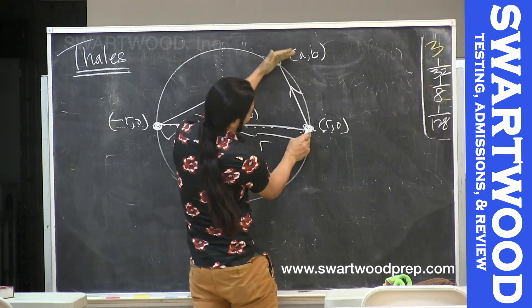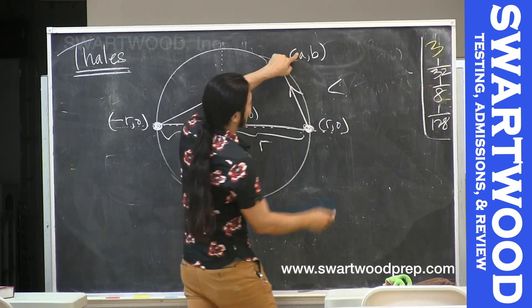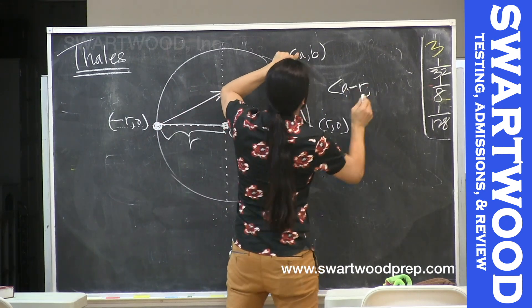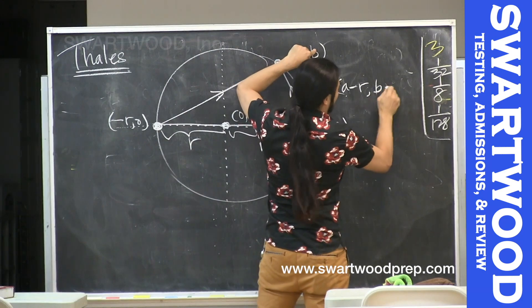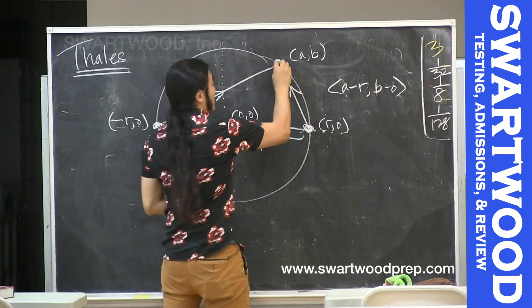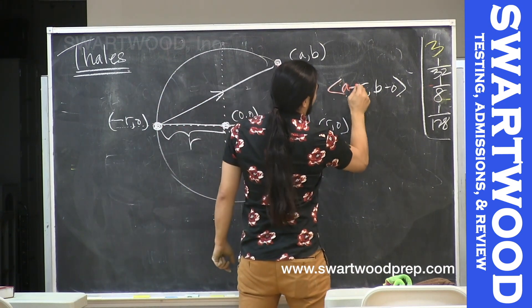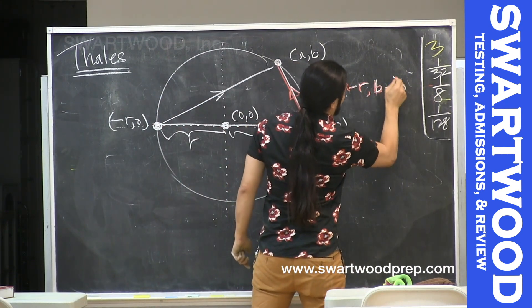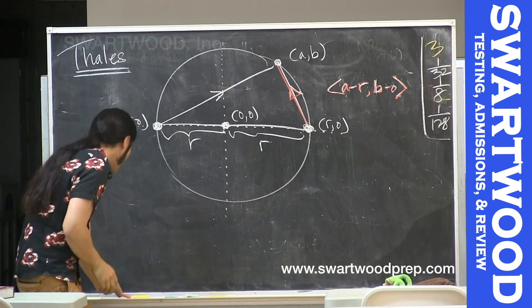Let's name them. So this vector here, where you end up minus where you started, so (a - R, b). And then this guy is gonna be (b - 0). So that's our vector here, (a - R, b).